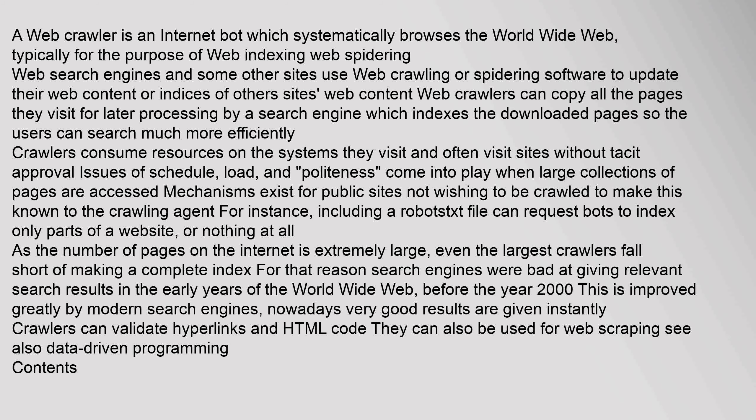Mechanisms exist for public sites not wishing to be crawled to make this known to the crawling agent. For instance, including a robots.txt file can request bots to index only parts of a website or nothing at all. As the number of pages on the internet is extremely large, even the largest crawlers fall short of making a complete index. For that reason, search engines were bad at giving relevant search results in the early years of the world wide web before the year 2000. This has improved greatly — modern search engines now give very good results instantly. Crawlers can also validate hyperlinks and HTML code and can be used for web scraping.